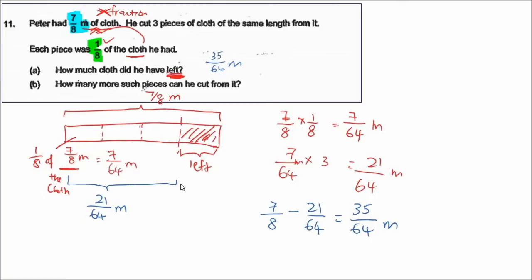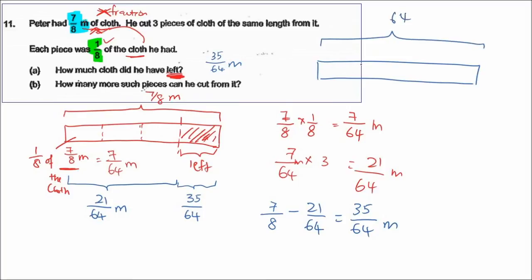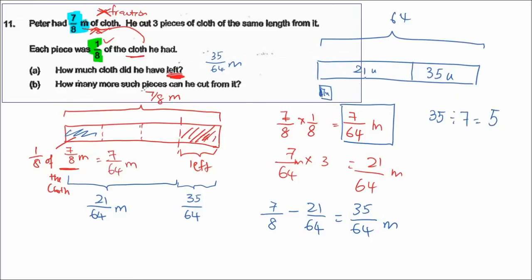This portion here is 35 over 64. So how many more such pieces can you cut from it? Let me draw this — the whole bar is 64 units. This portion is 21 units and this portion is 35 units. One-eighth of it is 7 over 64, so one piece is 7 units. You have 35 remaining, so 35 divided by 7 gives you 5. You can cut five more pieces.